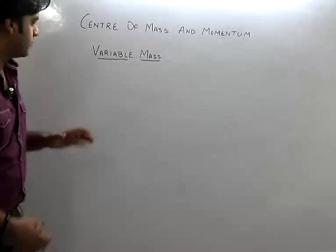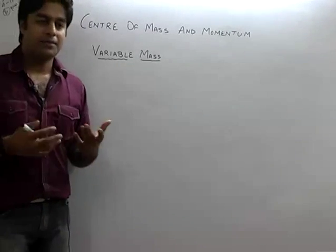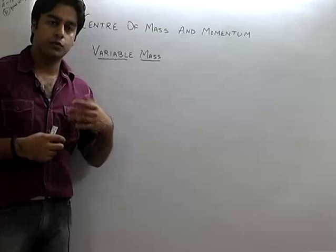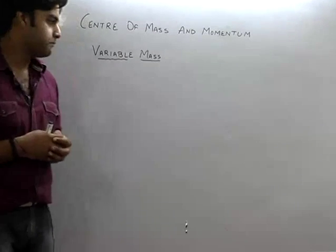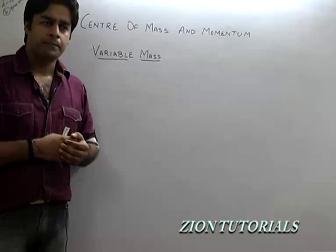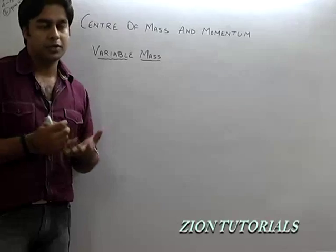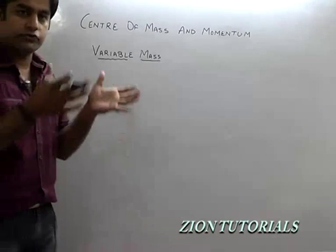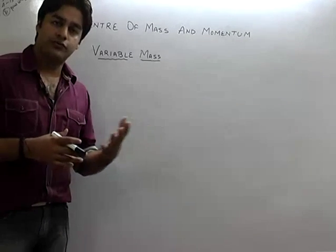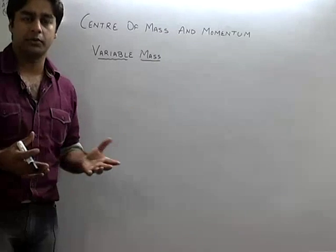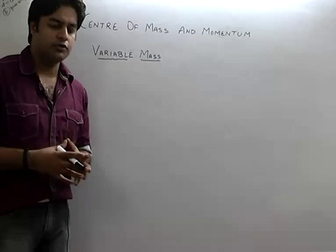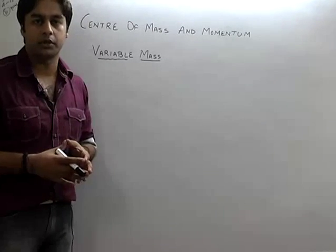Another topic is variable mass. We have seen that acceleration or change in velocity was only due to the external force applied. Now think about rockets — how do they propel and what is their velocity? There is no external force, but still they move, they accelerate and have some velocity that keeps increasing. When we think about a rocket, gases come out and push it.